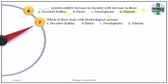Question 7. Which of these deals with bioreological systems? The answer is Herschel-Bulkley systems — they deal with bioreological types of systems. For example, your blood. Blood is a biological system whose rheological property can be classified under Herschel-Bulkley systems.